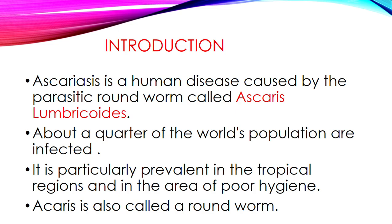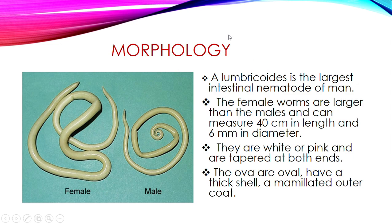When it comes to morphology, this is how the parasites look. The female is bigger than the male. Ascaris lumbricoides is the largest intestinal worm. Females are larger than males and can measure up to 40 cm in length and 6 mm in diameter. They are white in color or can be pink, and are tapered at both ends.